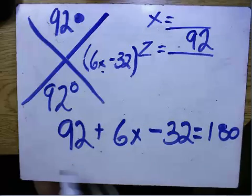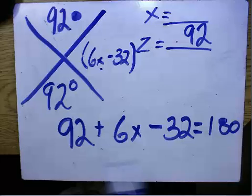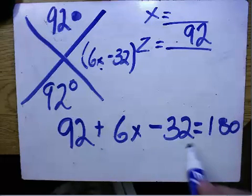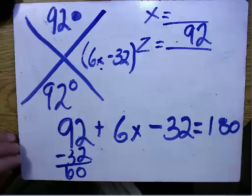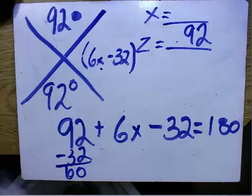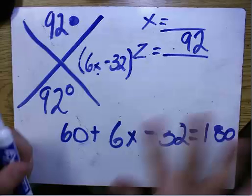So we have to combine like terms. You have 92 subtract 32, and you get 60. So now you have 60 plus 6x equals 180.